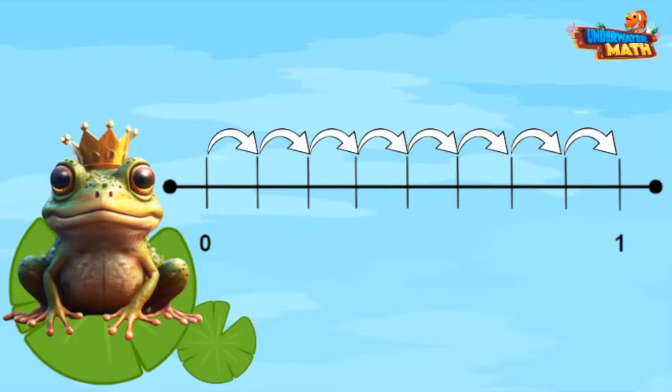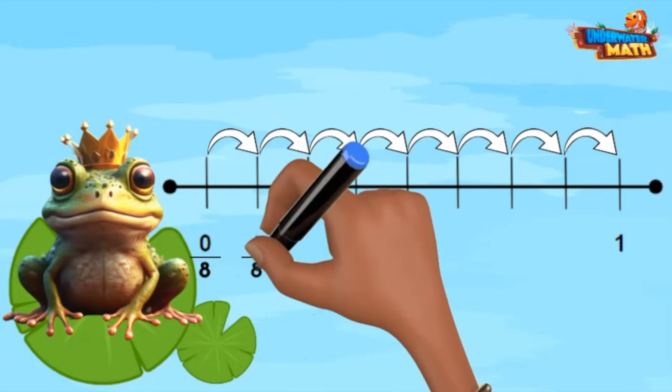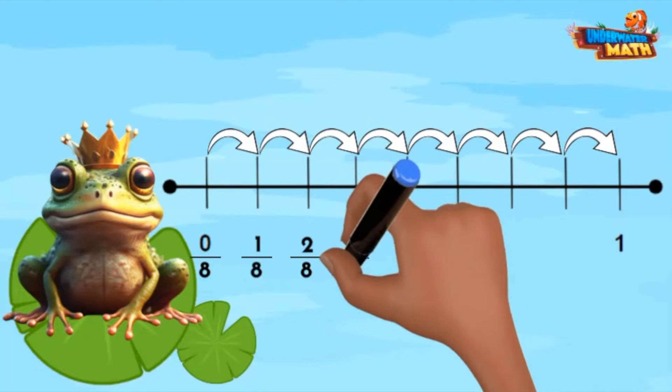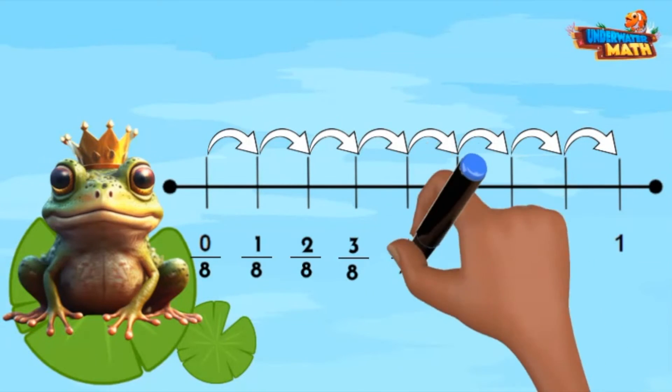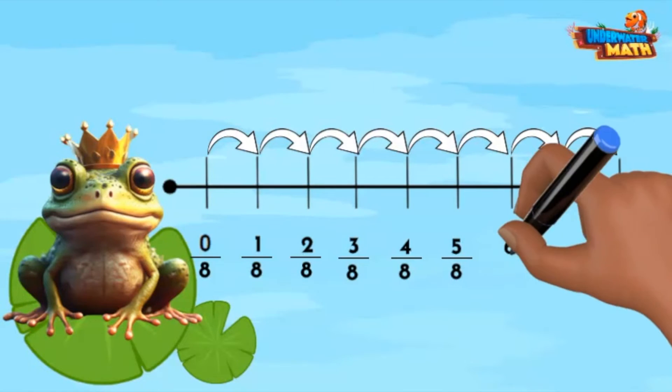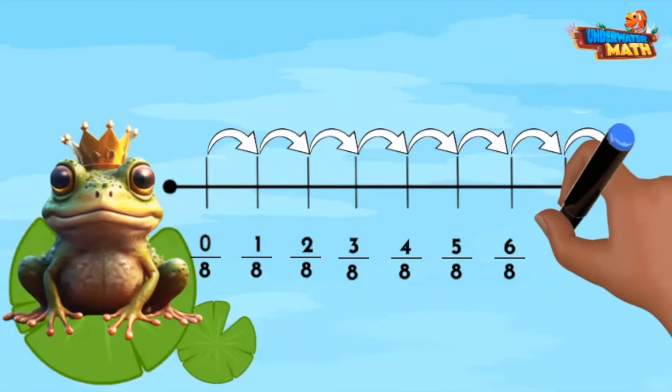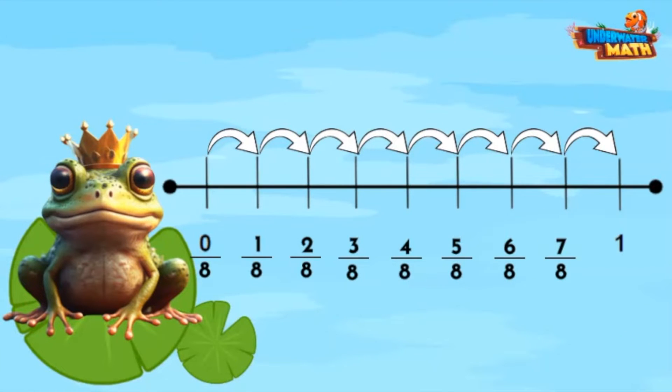This hash mark represents zero eighths. One eighth, two eighths, three eighths, four eighths, five eighths, six eighths, seven eighths, and one whole or eight eighths.